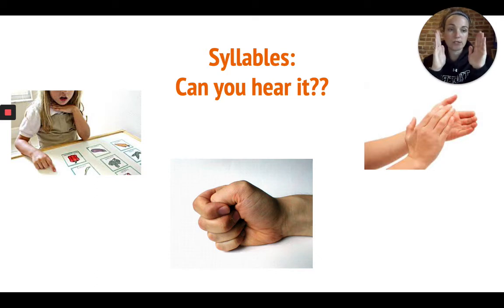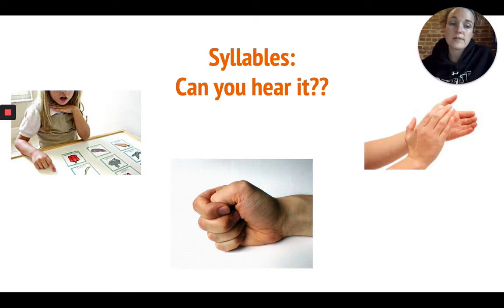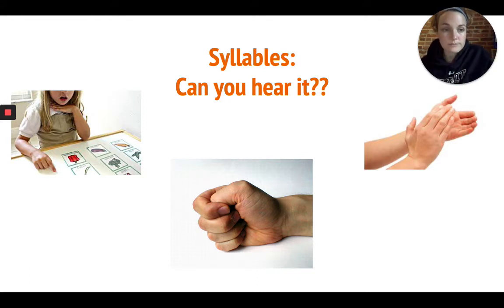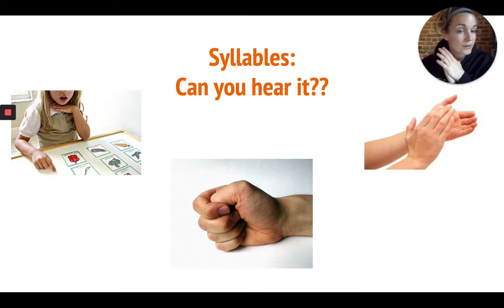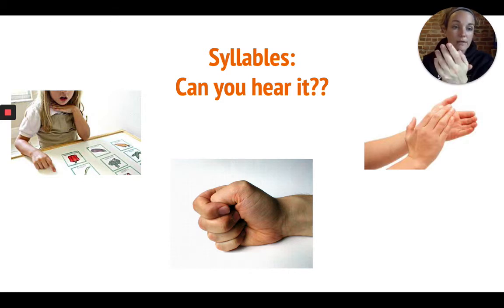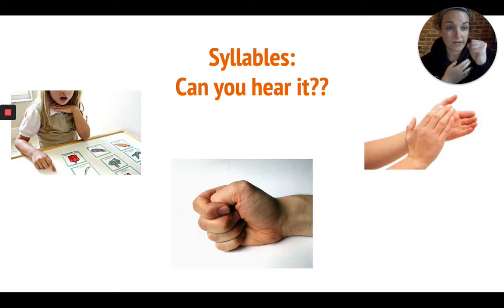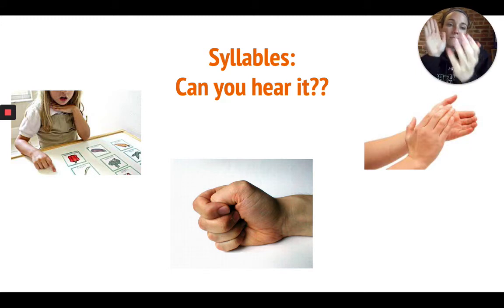So we can do the same thing. Even though when we say the word Batman we say it really fast, if you slow down you'll be able to hear the different syllables or parts of the word. Ready? Batman. How many times did I clap? Two. So we can use our chin, our fist, or our hands to clap. Batman. You choose which one is going to work for you.